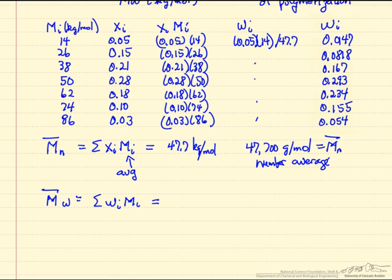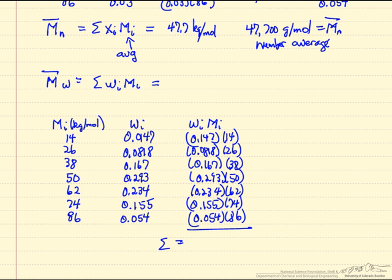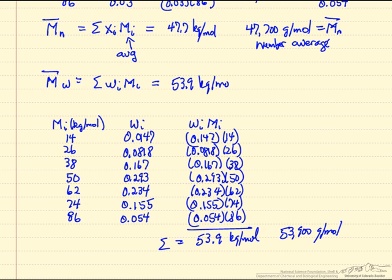Now we take the weight fraction and multiply it by Mᵢ to get the weight average molecular weight. I've listed the average molecular weight, the weight fraction, and their product. Doing this multiplication and summing gives 53.9 kilograms per mole, or 53,900 grams per mole — the weight average molecular weight.